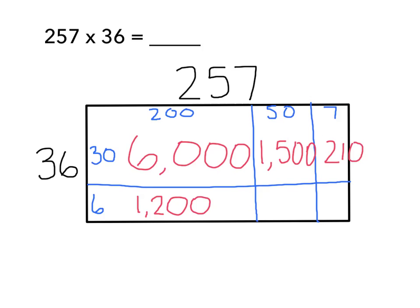Moving over, I have 50 by 6. I know that 5 times 6 is 30, and 50 times 6 is 300. And my last array is labeled 7 by 6, and that's one of my math facts. I know 7 times 6 is 42.